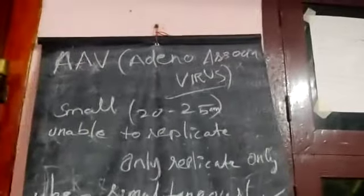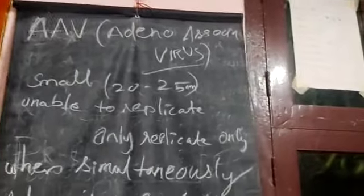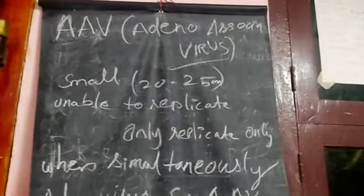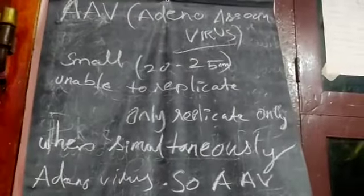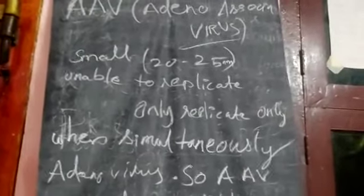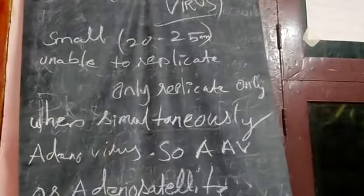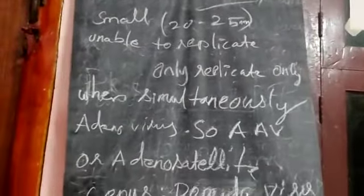Adeno-associated virus: under isolation of the adenovirus, we can see small icosahedral particles that are only 20 to 25 nanometers in diameter. These are called adeno-associated viruses. They are unable to replicate independently and can only multiply when simultaneously infected with adenovirus.